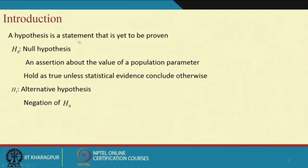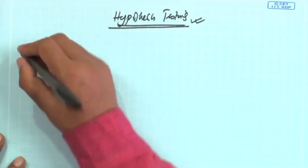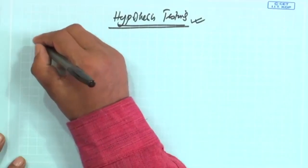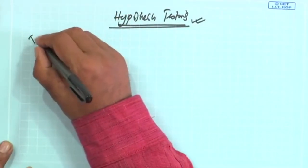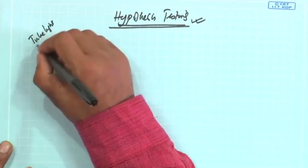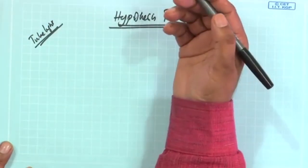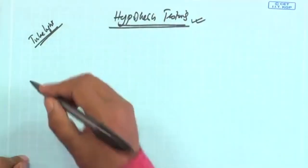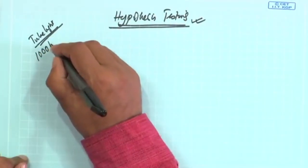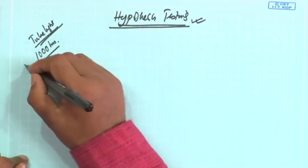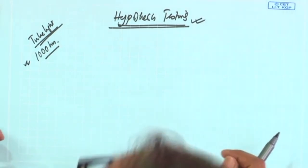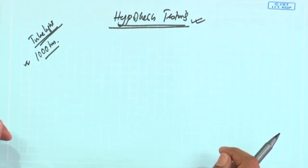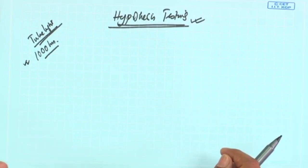What is hypothesis? A hypothesis is a statement that is yet to be proven. For example, consider a manufacturer producing a tube light. You want to know how long it will burn continuously. The manufacturer may say that it will continuously burn for 1000 hours — that is, the manufacturer states that on average the tube light their company produces has 1000 hours of continuous burning.